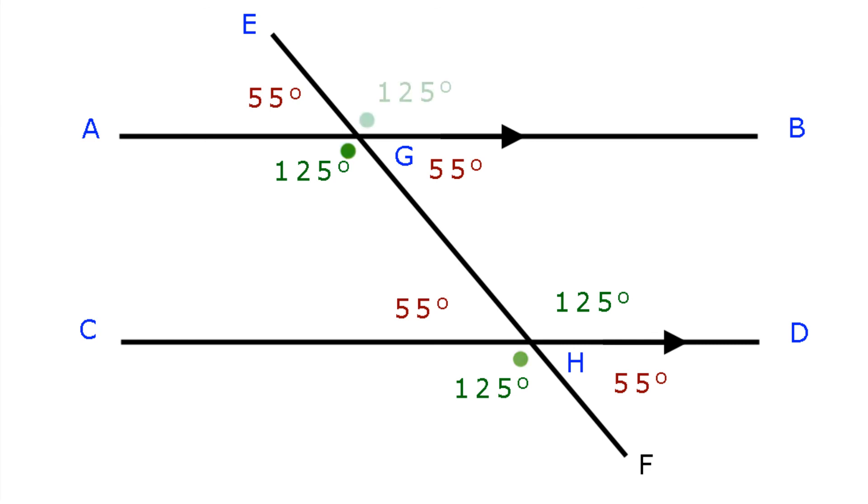Angle BGH equals angle EGF, they're vertically opposite angles. Therefore angle EGF equals 125 degrees. And that's your lot for now.